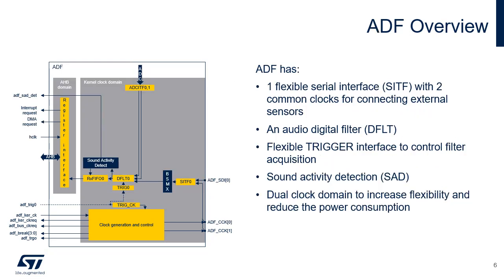ADF is a subset of MDF, making it very suitable mainly for audio applications. ADF incorporates one flexible serial interface and two common clocks for connecting external microphones. A BSMX for selecting the desired bitstream. A configurable audio-digital filter for audio capture. Two parallel interfaces for internal ADCs, not used in the STM32U5. Flexible trigger interface to control filter acquisition. A sound activity detector for sound or voice detection. ADF has two clock domains to increase flexibility and reduce power consumption.